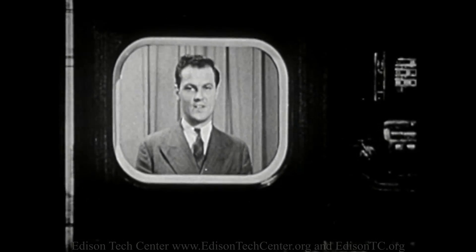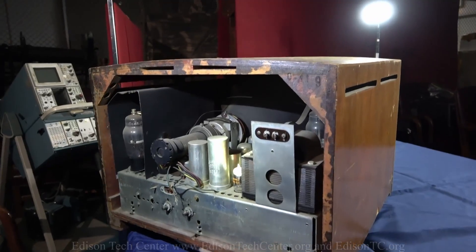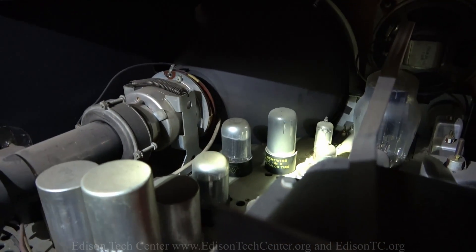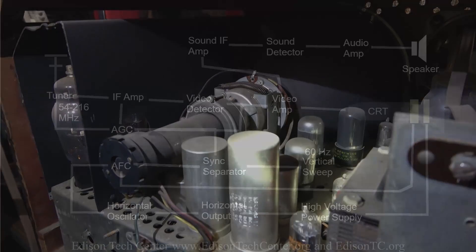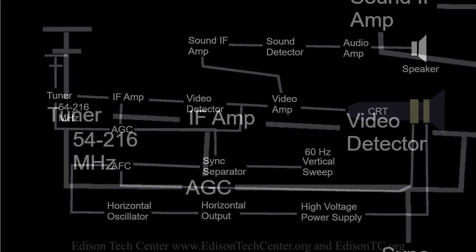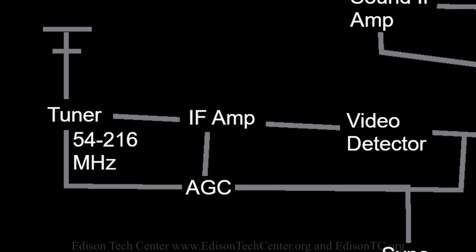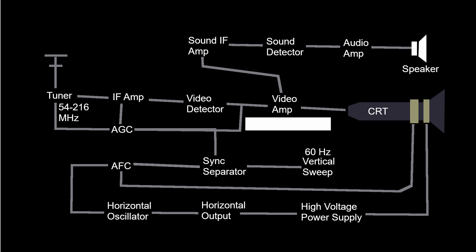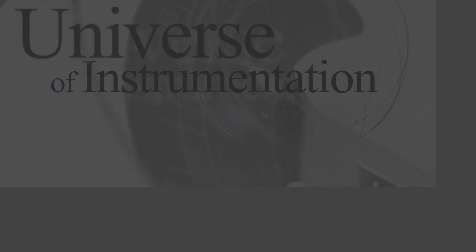The tubes you see here are amplifier tubes for the radio frequency, the television frequency. They detect what the signal is for the frequency you're looking at — for channel 6 versus channel 12 or 13. Then once you have the signal out, you have to push it into the actual showing of the picture on the screen.